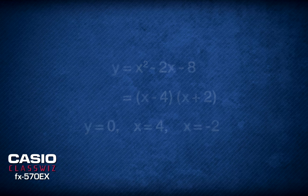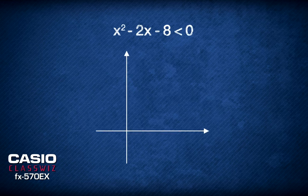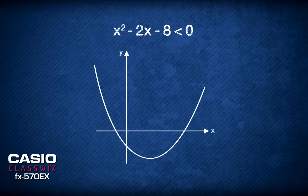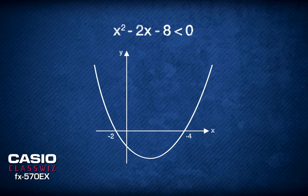Since the coefficient of x squared is positive, we have a quadratic graph with a minimum turning point which can be drawn like this. This inequality requires the quadratic values that are negative.